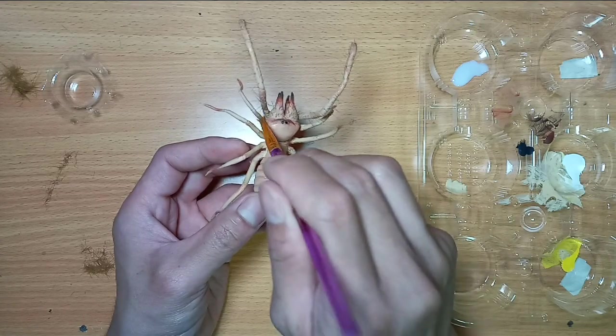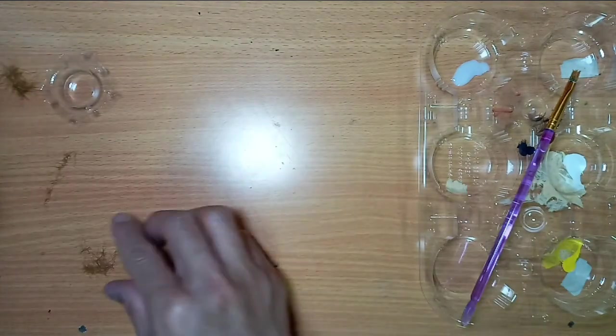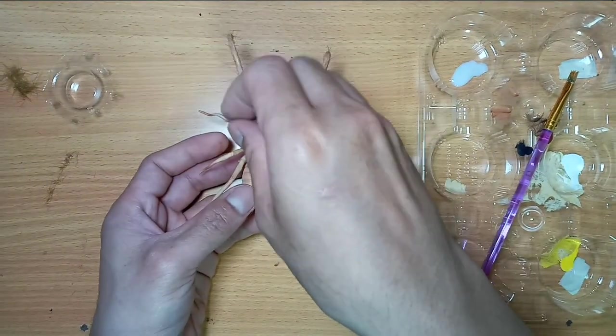I brushed the femur part of its legs with polyurethane varnish and sprinkled them with shorter bristle hairs to imitate those tiny hairs on them.